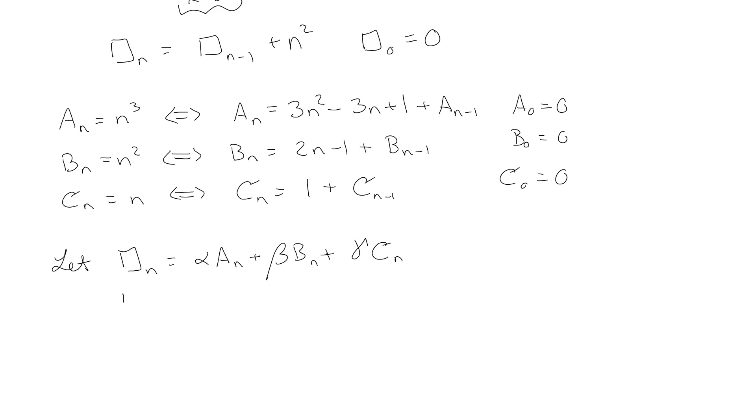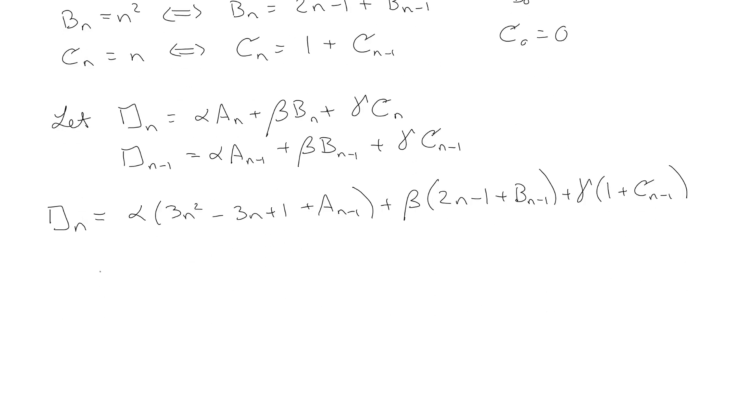We know that equals that, so that means that the n minus one term would also be basically the same thing but with an n minus one term on it. We can go ahead and everywhere we see an A sub n we can plug in the recursive definition, so we've got 3n squared minus 3n plus 1 plus A sub n minus one, and then beta times 2n minus 1 plus B sub n minus one, and then gamma times 1 plus C sub n minus one.